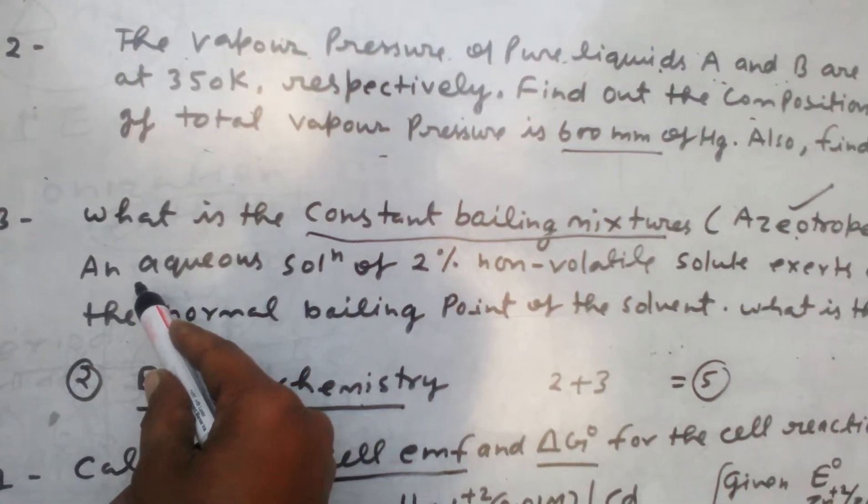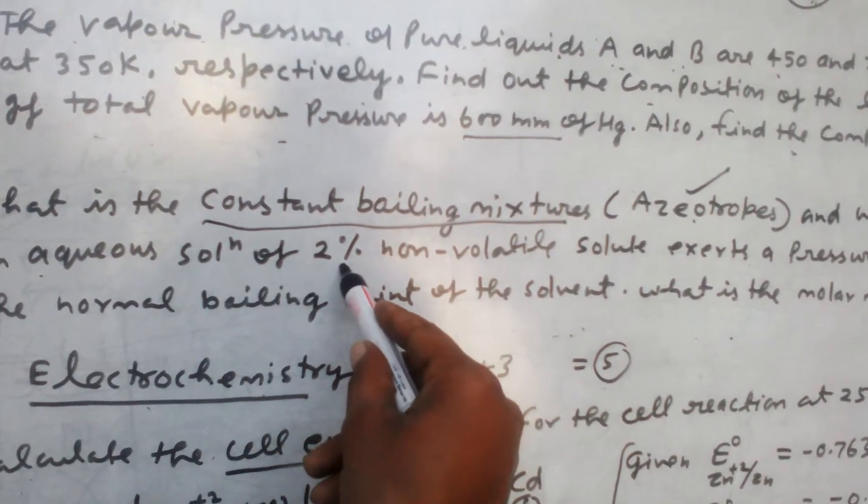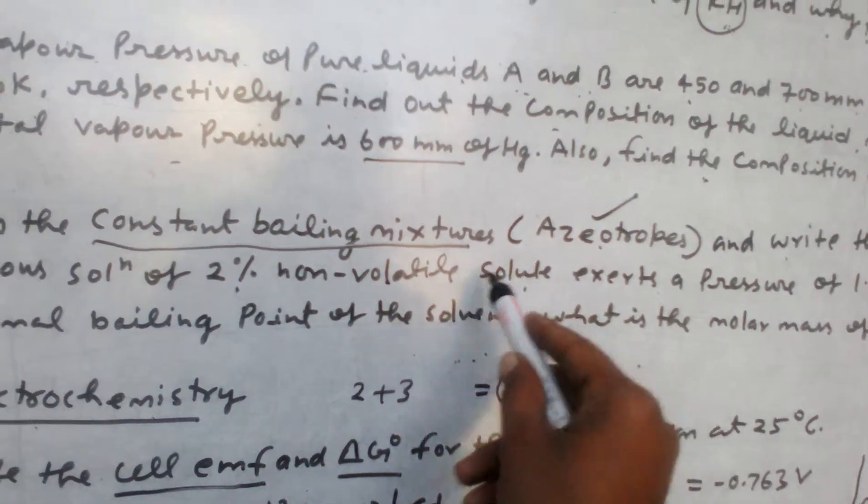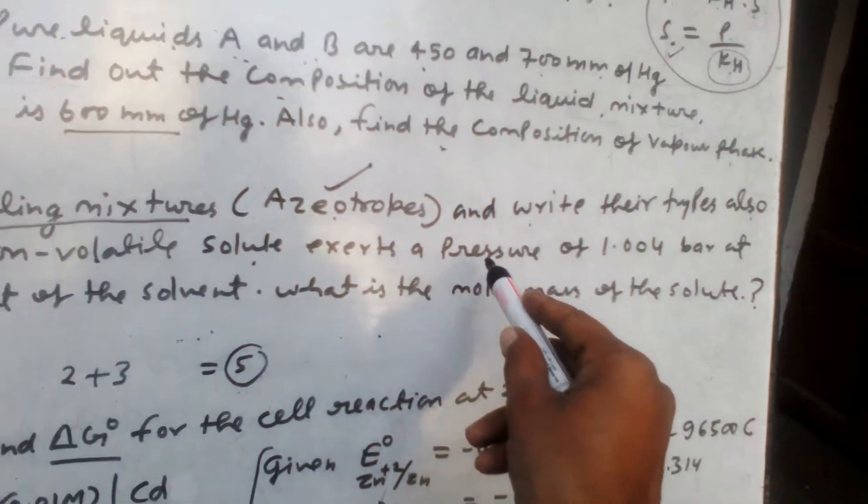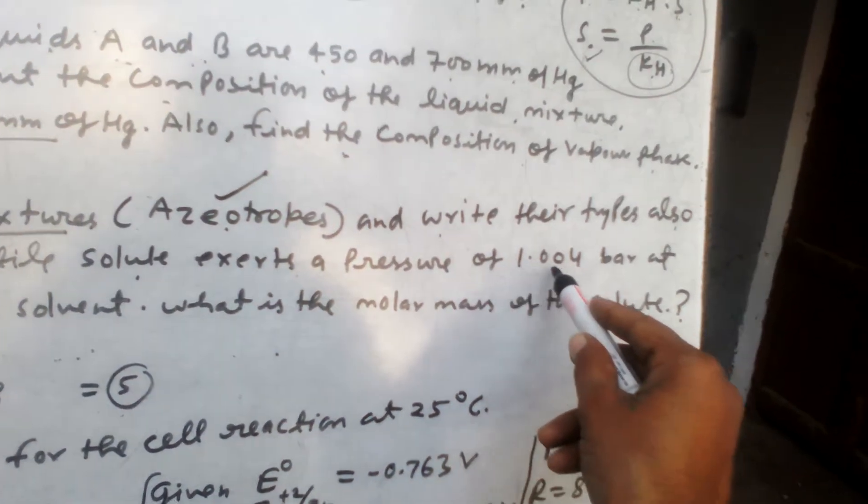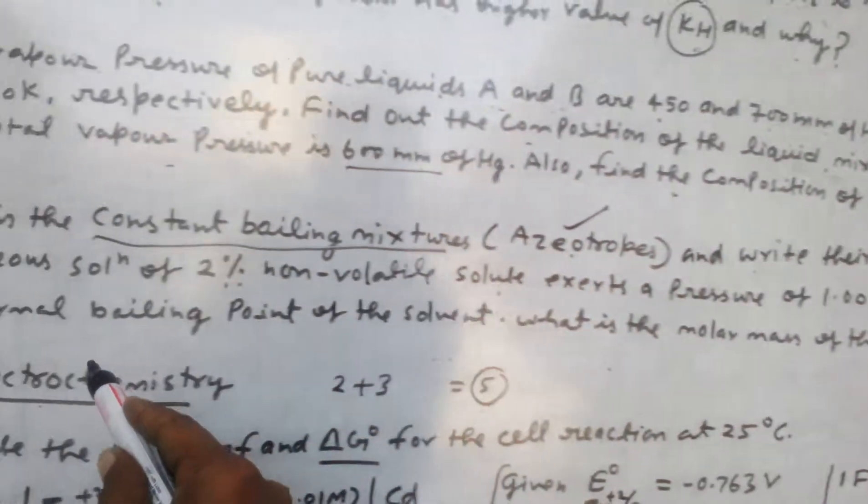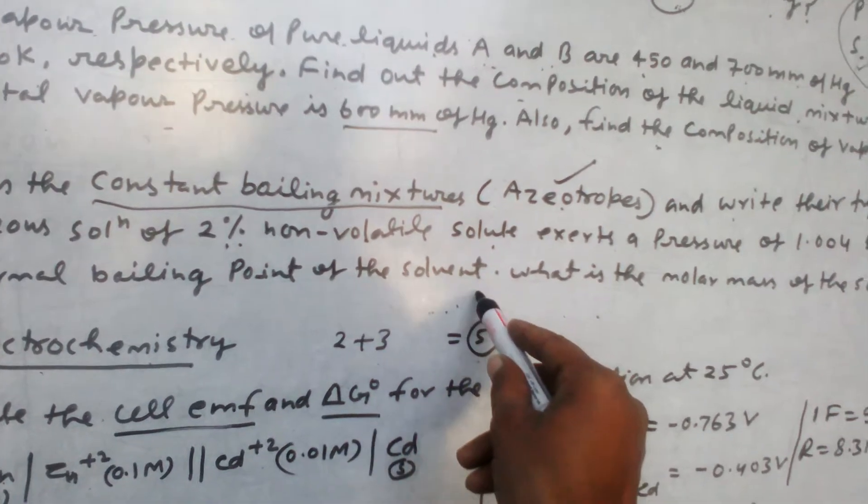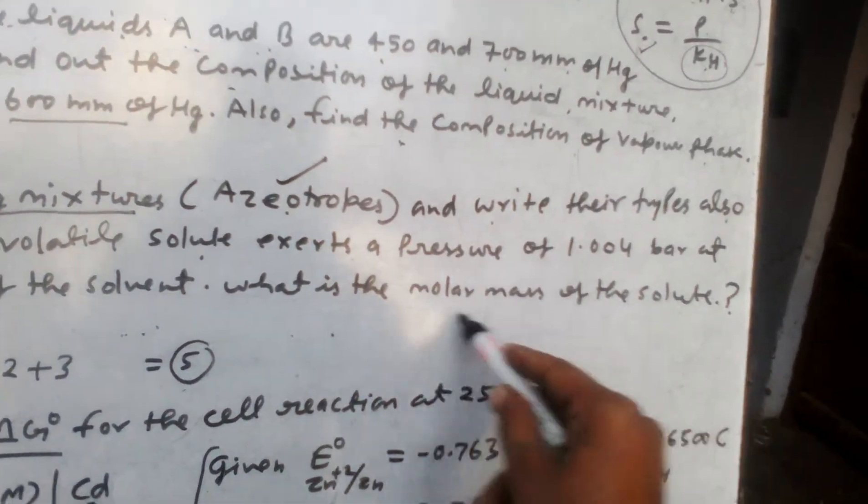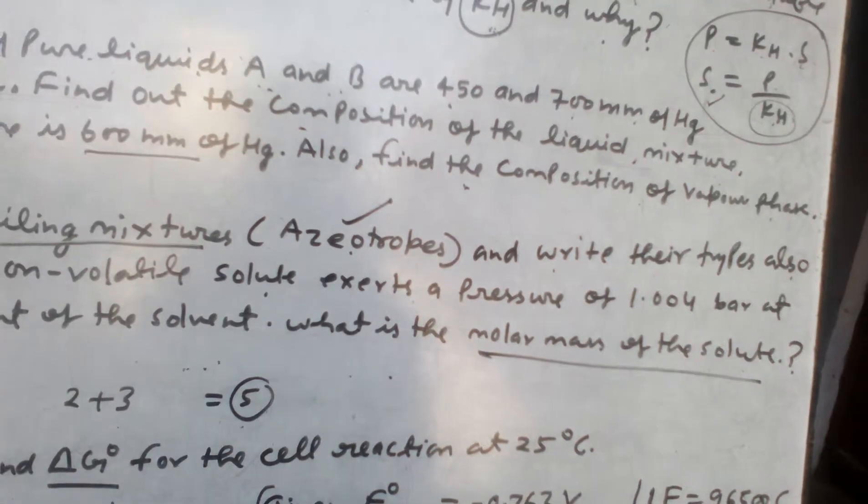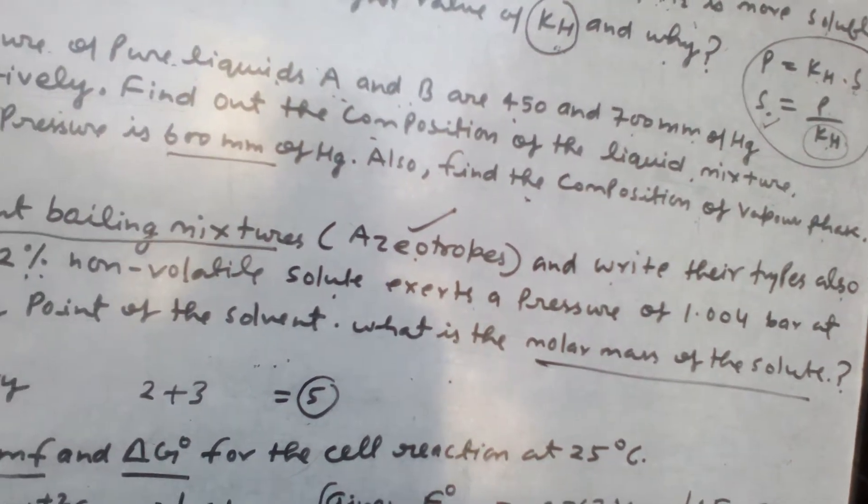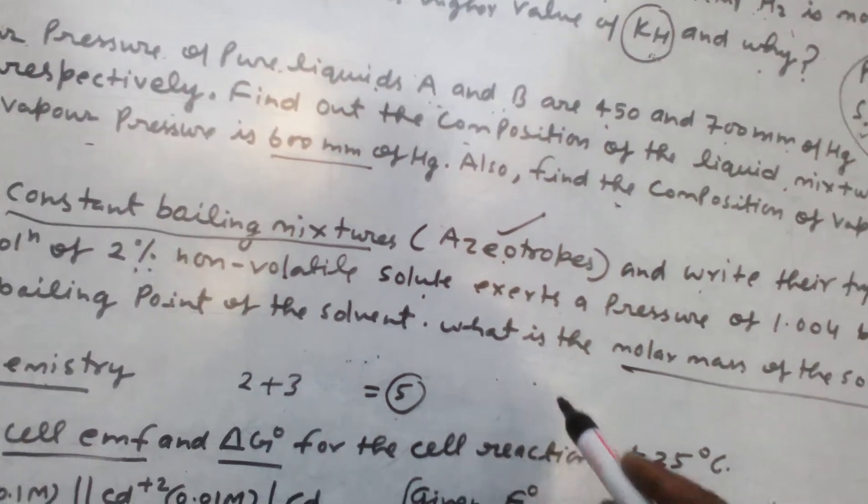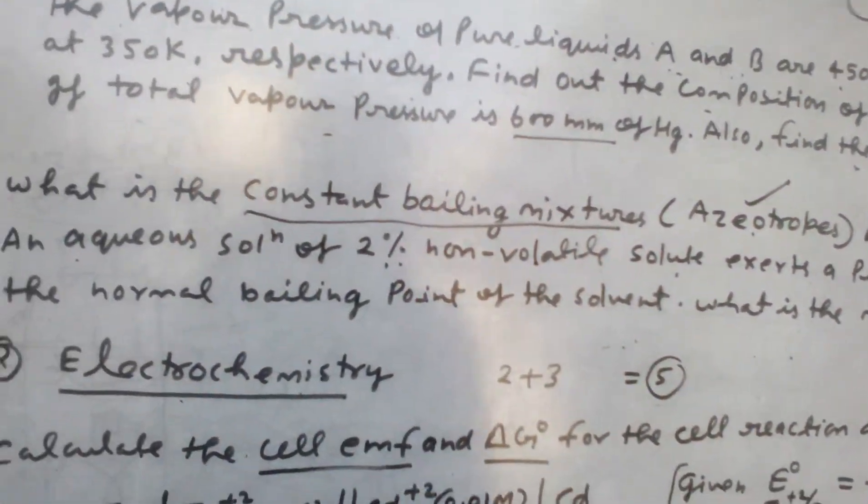A numerical: a solution of 2% non-volatile solute exerts pressure of 1.004 bar at the normal boiling point of the solvent. What is the molar mass of the solute? You have to use lowering of vapor pressure when it comes to non-volatile solute numerical.